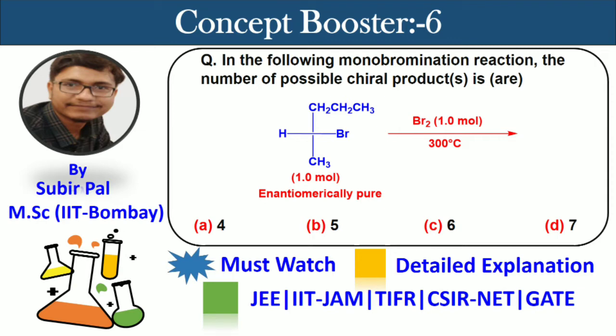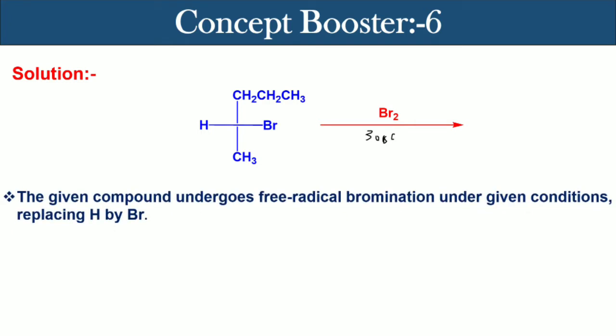Let's see the solution now. If this bromoalkane is treated with bromine at 300 degrees centigrade, then it will undergo free radical bromination, replacing hydrogen by bromine. In that case, I am not going to explain the mechanism, but the important thing is that the number of possible product formations will depend upon the number of different types of hydrogens available in the bromoalkane molecule.